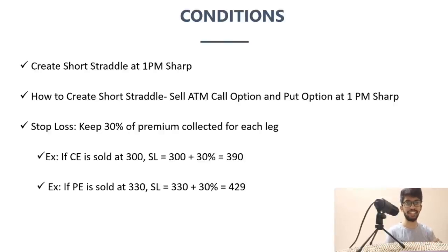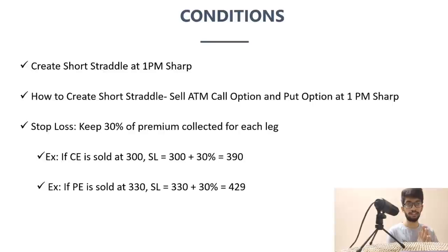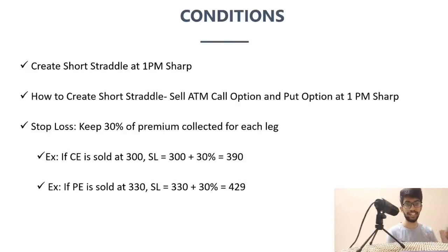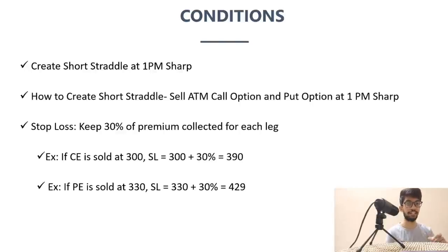Come to your trading terminal by 12:50. At 1 o'clock, see what level BankNifty is trading. Do a short straddle — sell ATM call and ATM put. Then keep 30% of the premium collected on each leg as the stop loss. If CE was sold at 400, stop loss is 520. If PE was sold at 300, stop loss is 390. This is the entire strategy — very simple.